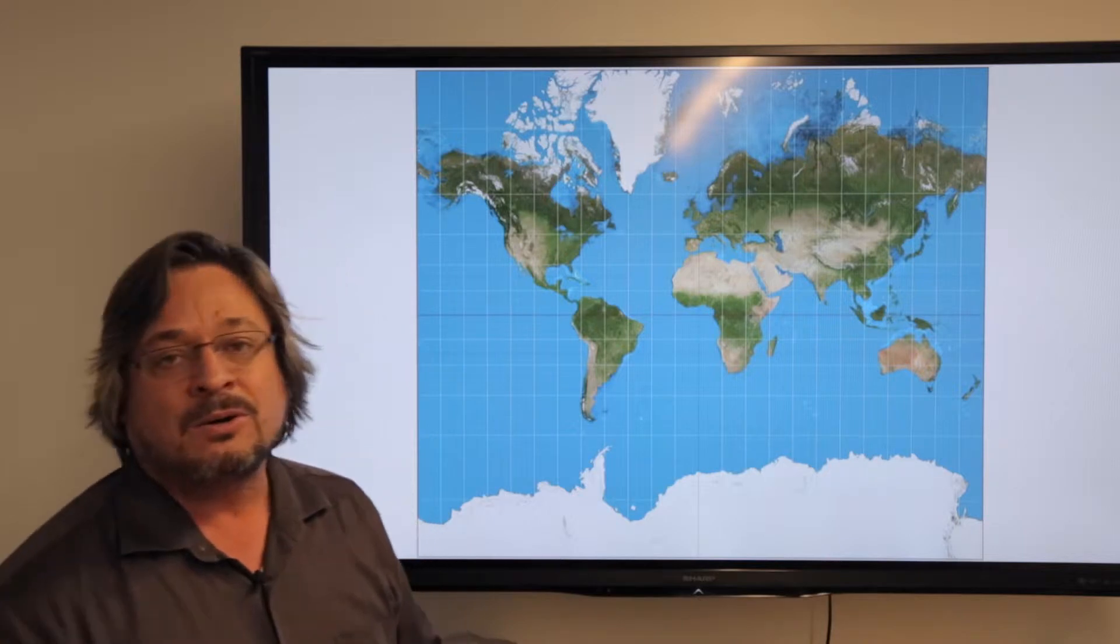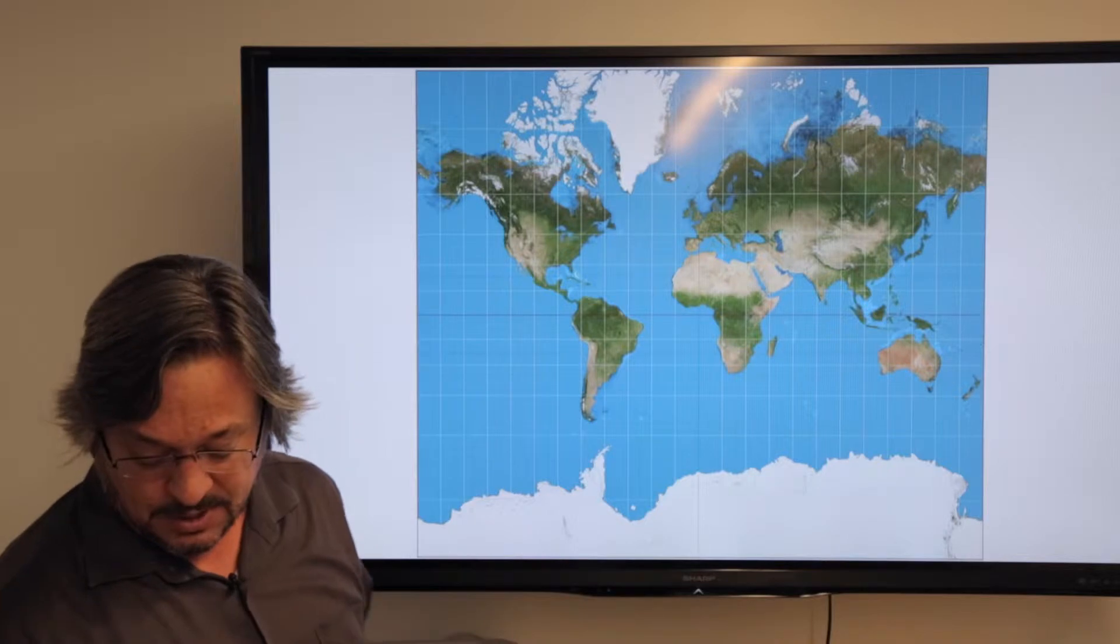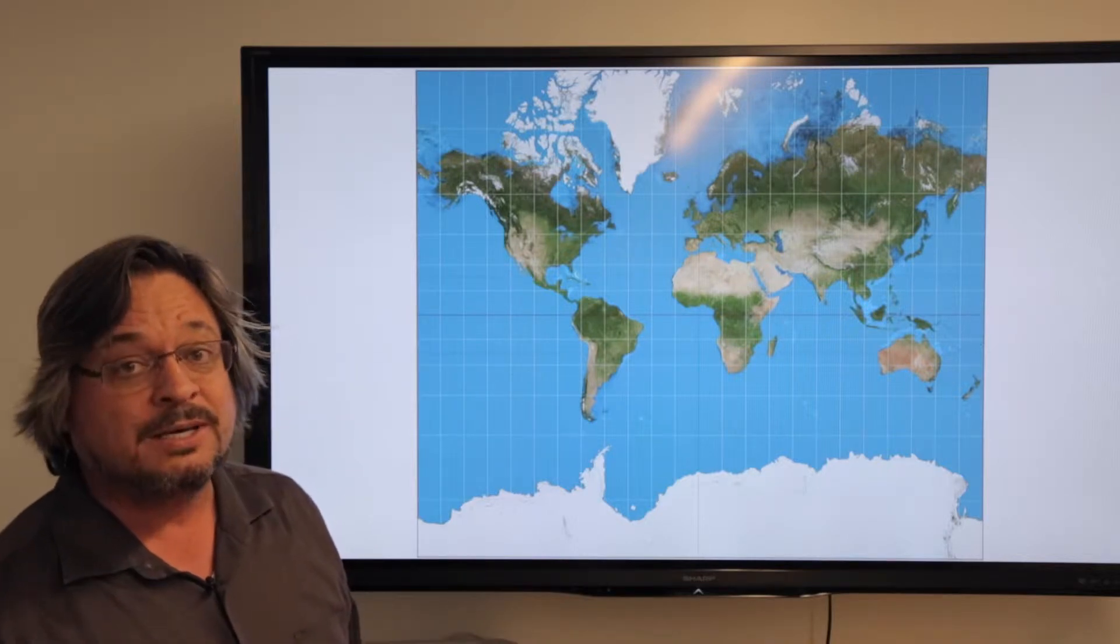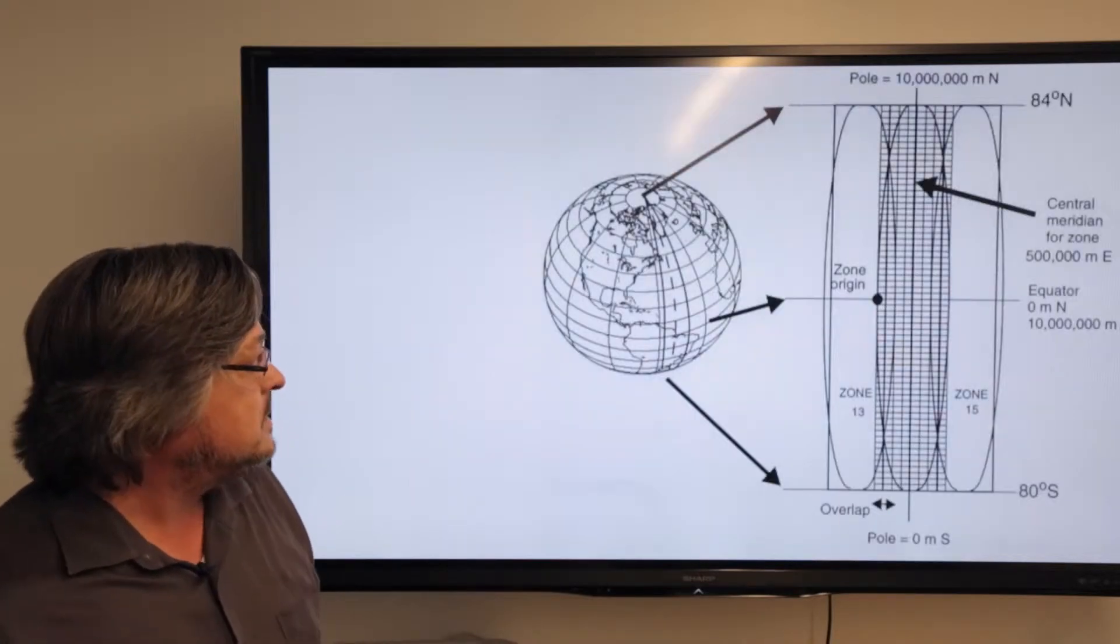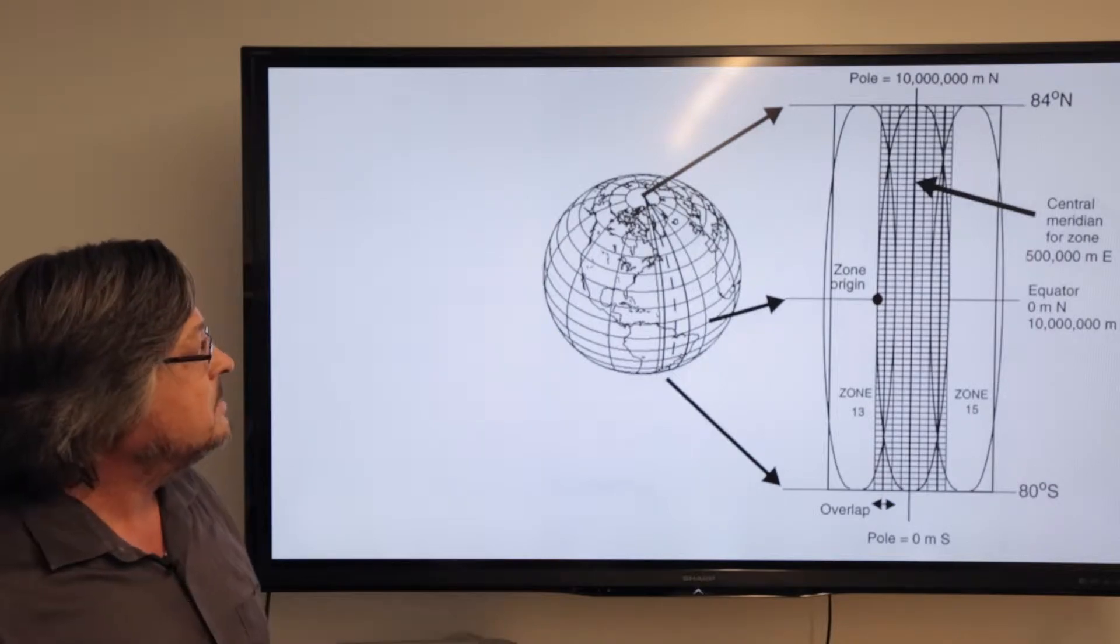UTM, or Universal Transverse Mercator, is probably the most commonly used reference system in the world in GIS. So let's take a little closer look at how it breaks apart.